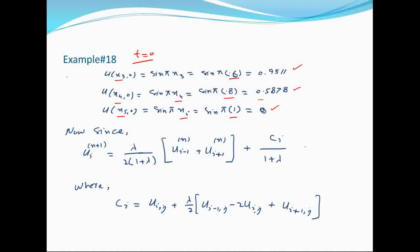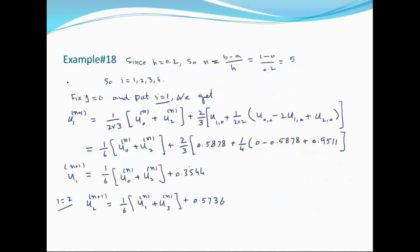यह Jacobi iterative scheme है। इसमें main equation B है और c_i की value नीचे दी गई है। Heat equation की Jacobi scheme already derive हुई है।